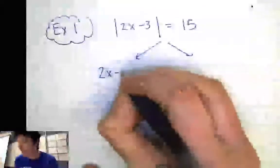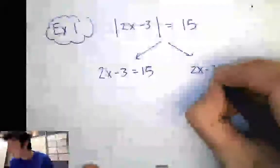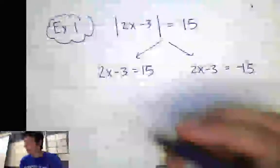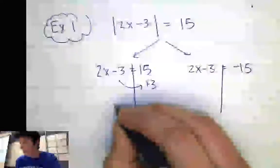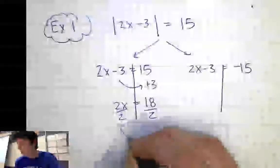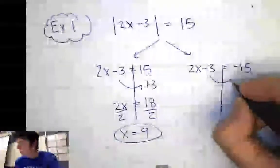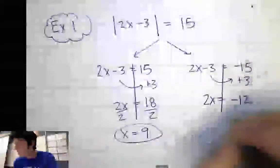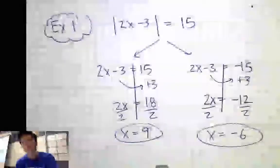Either 2x minus 3 has to equal 15, or 2x minus 3 could equal negative 15, because the absolute value of negative 15 is positive 15. Solving the first: add 3 over — 2x equals 18, divide by 2, x equals 9. Solving the second: add 3 over — 2x equals negative 12, divide by 2, x equals negative 6. Those are my two possible answers for x.